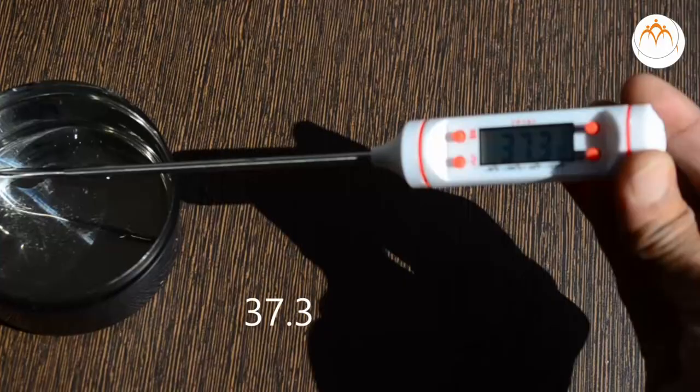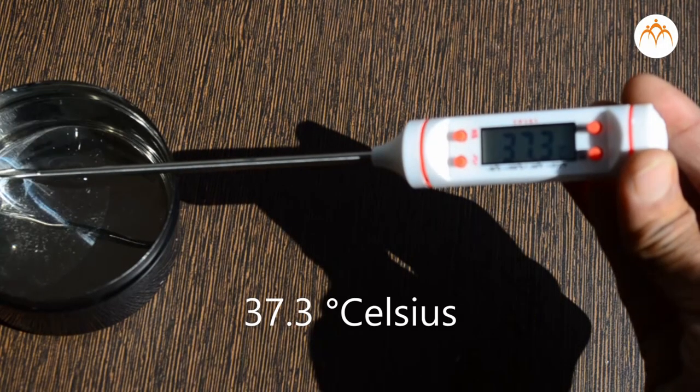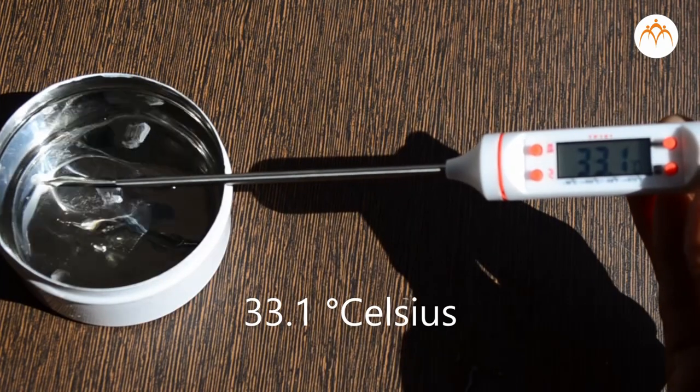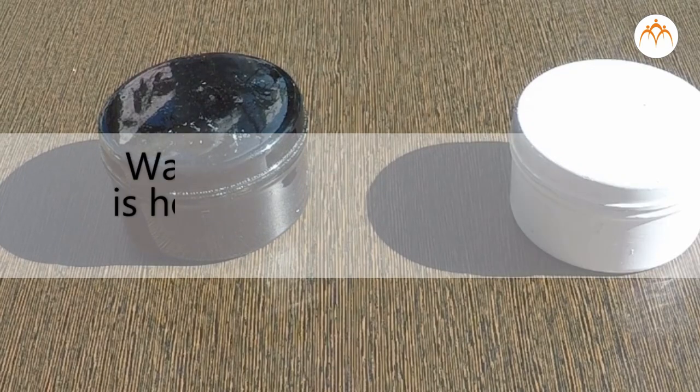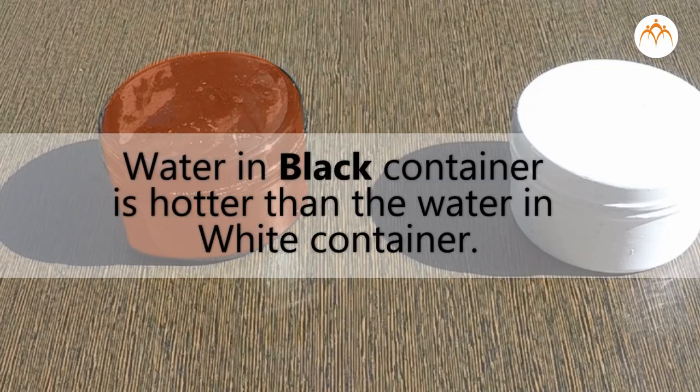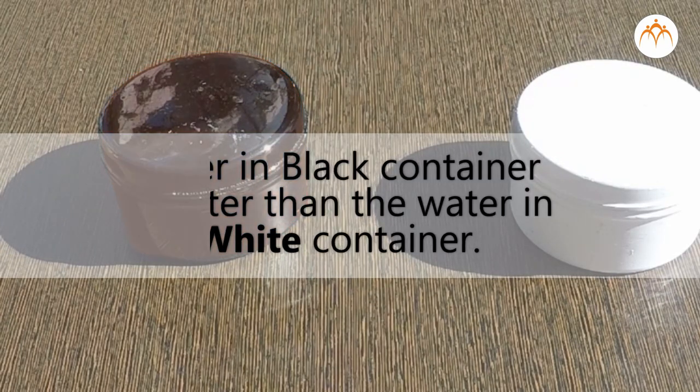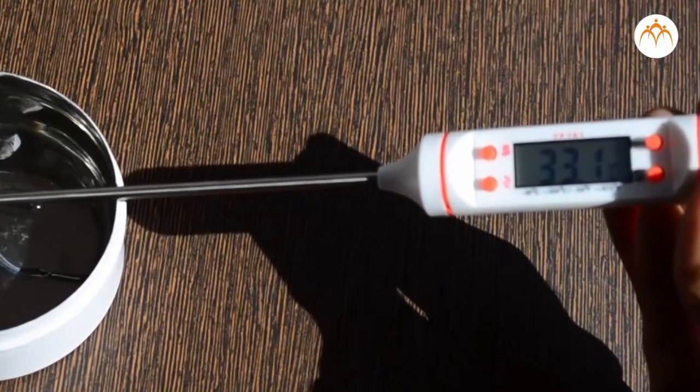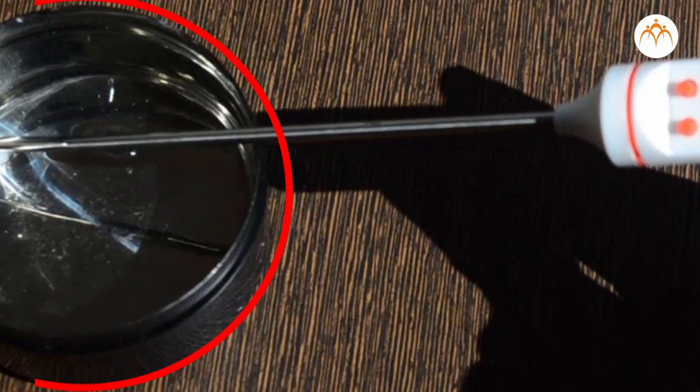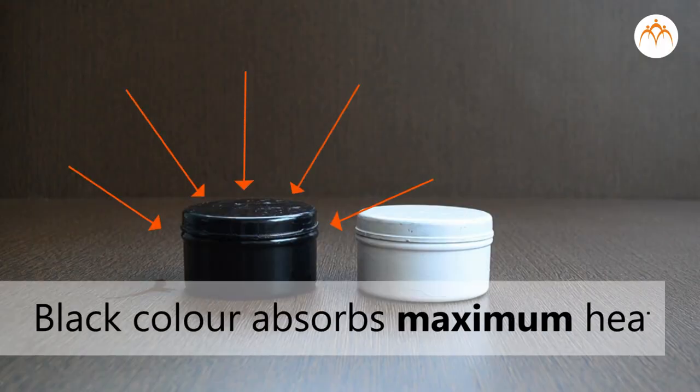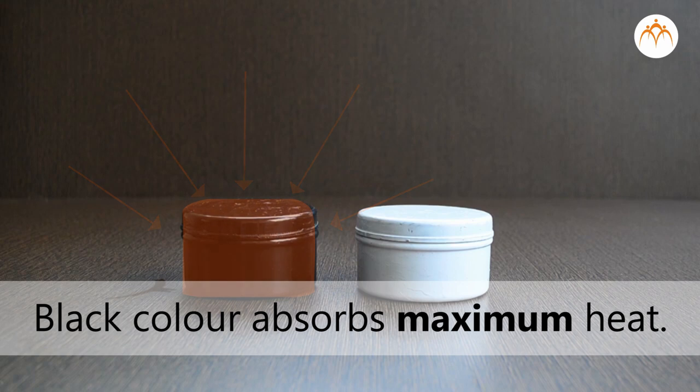It is 37.3 degrees Celsius for the water in black container and 33.1 degrees Celsius for the white container. It looks like water in black container is hotter than the white container. We can say that the ability of a substance to absorb heat also depends on its color. Black color absorbs maximum heat.